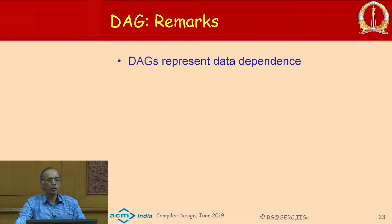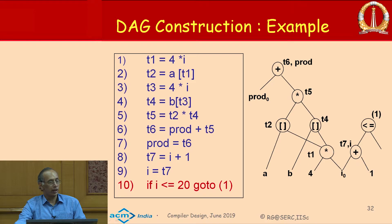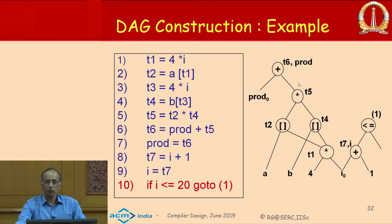Now that we have this DAG, how do we generate code for it? In what order? The DAG also represents data dependence: to compute T6 you need T5, to compute T5 you need T2 and T4, and so on. So code generation must be done bottom-up — you cannot generate code for a node unless you have already generated code for its children.